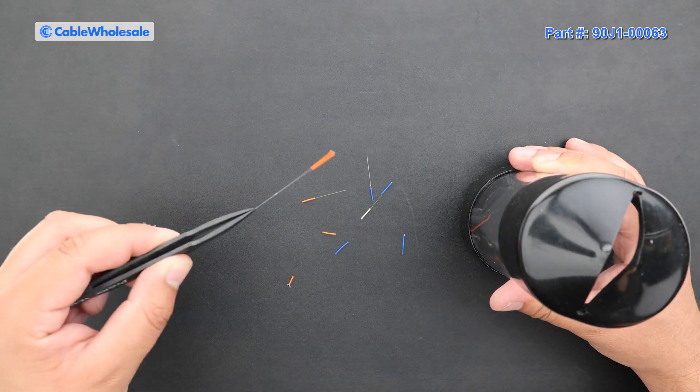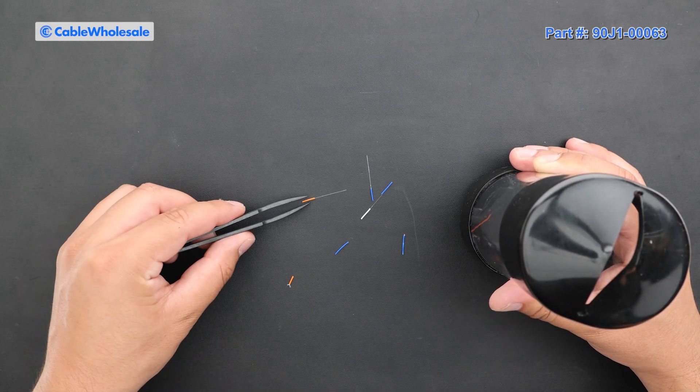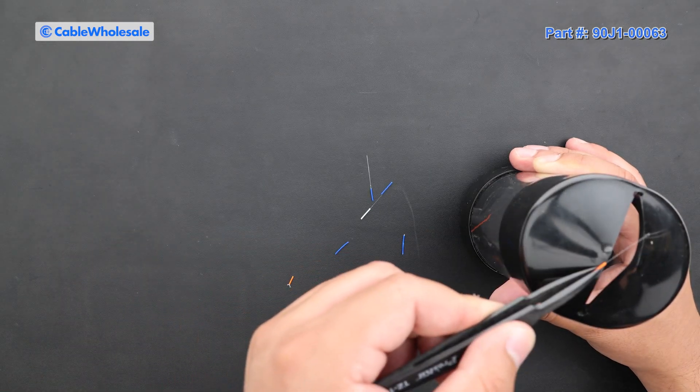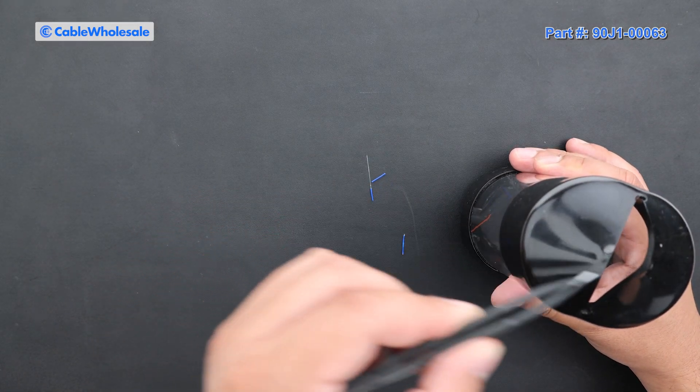Another big advantage, cleanliness. The black mat makes it easy to spot dirt, dust, and debris, helping you keep your workspace clean. Fiber optics need to be handled in a dust-free environment to avoid signal interference or damage to the fiber.